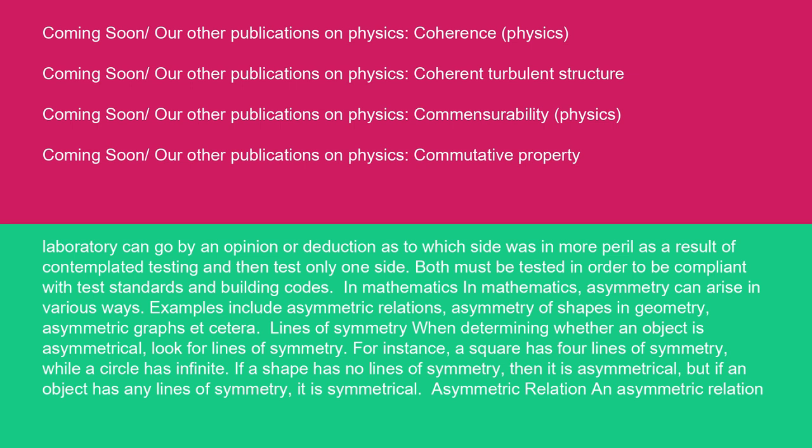In mathematics, asymmetry can arise in various ways. Examples include asymmetric relations, asymmetry of shapes and geometry, asymmetric graphs, etc. Lines of symmetry. When determining whether an object is asymmetrical, look for lines of symmetry. For instance, a square has four lines of symmetry, while a circle has infinite. If a shape has no lines of symmetry, then it is asymmetrical, but if an object has any lines of symmetry, it is symmetrical.